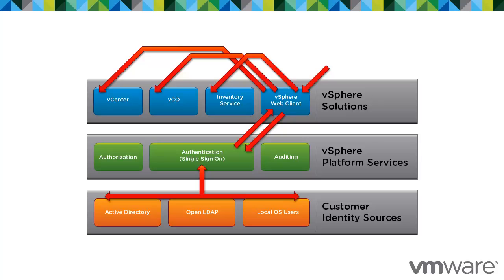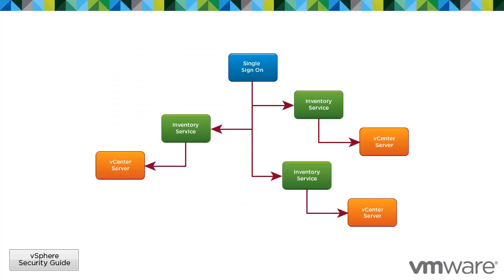Single Sign-On operates across all cloud infrastructure suite components that support this feature. Authentication by the vCenter Single Sign-On makes the VMware cloud infrastructure platform more secure by allowing the vSphere software components to communicate with each other through a secure token exchange mechanism, instead of requiring each component to authenticate a user separately with a direct service like Active Directory.